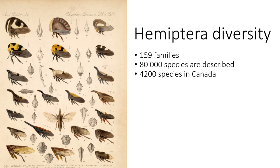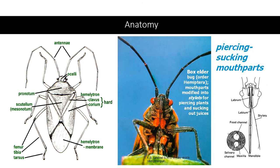These are known as true bugs, and Hemiptera means half-wing in Greek. When we say half-wing, we are referring to the hard hemelytron, which is a hard covering that covers half of the body. The other half is the hemelytron membrane. The most important part of the anatomy is the piercing-sucking mouthparts Hemiptera have — this is basically the key to their order and their specialization with plants.